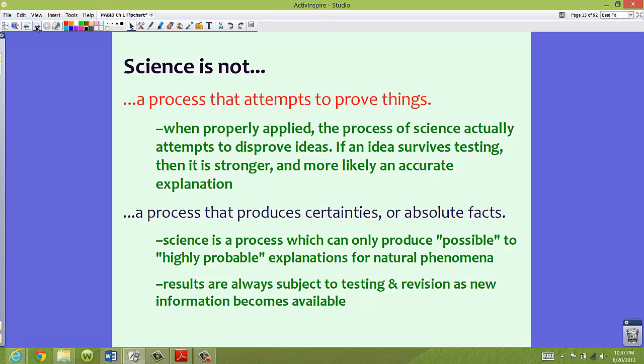Now, science is not a process that attempts to prove things. So when I give a hypothesis and I try to perform an experiment based on that hypothesis, I'm not out to prove that hypothesis. I'm out to state whether it's correct or incorrect. I want to make sure that I test it to see if it's going to be survivable in the scientific community. So when properly applied, the process of science actually attempts to disprove ideas. If an idea survives testing, then it is stronger and more likely an accurate explanation. So a lot of the things that we know about in science, in the natural world, have actually been discovered by something that went wrong in the scientific method.